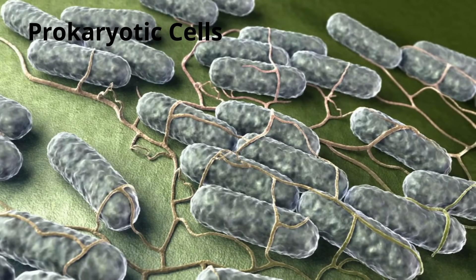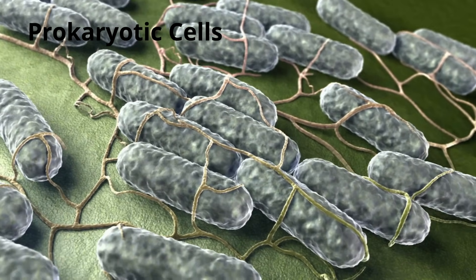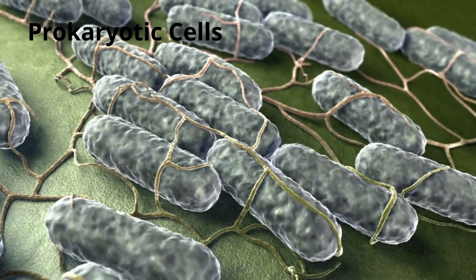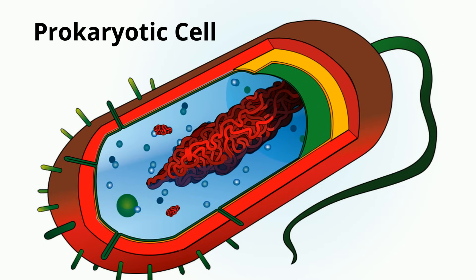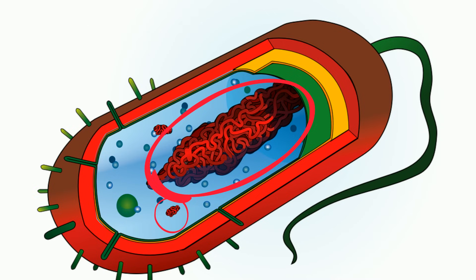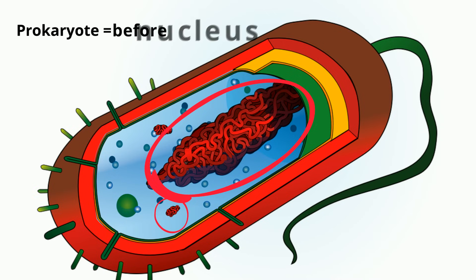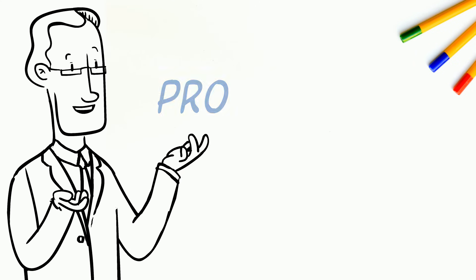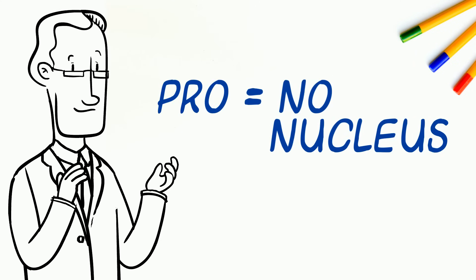Prokaryotic cells do not have membrane-bound organelles, but they do have a cell membrane, ribosomes, and genetic material such as DNA and RNA, but they do not contain a nucleus. The DNA is found in the cytoplasm or in a circular form called a plasmid. In fact, prokaryote means 'before kernel,' which means before nucleus. I've always remembered it using 'pro' sounds like 'no' for no nucleus.